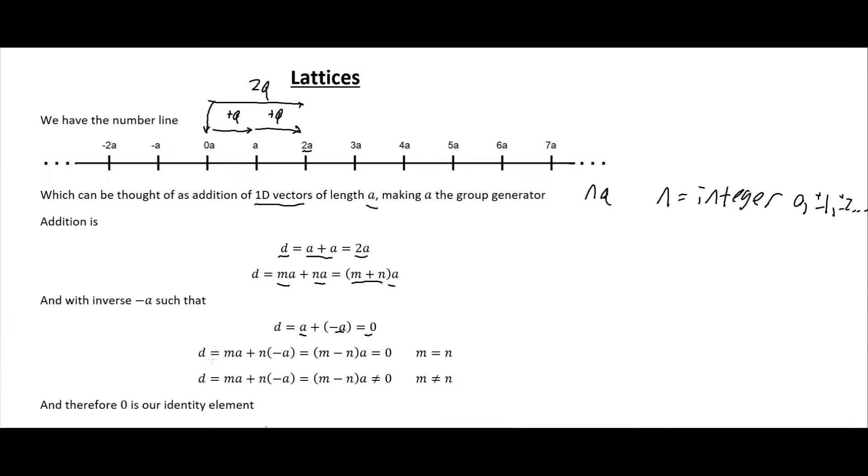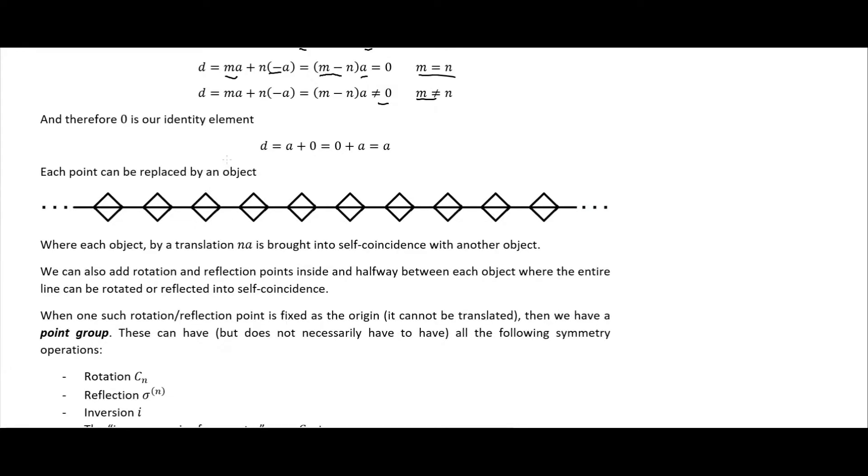We have an inverse such that a plus minus a goes to 0. More generally, ma + n(-a) = (m-n)a, and it's 0 if m equals n and not 0 if m does not equal n. Therefore 0 is our identity element. For each point we can replace them with some kind of two-dimensional object. Each object, by a translation of n times a where each of these objects a distance a apart, is brought into self coincidence with another object.